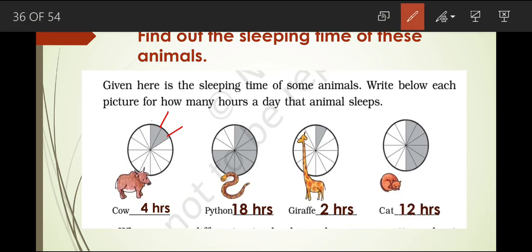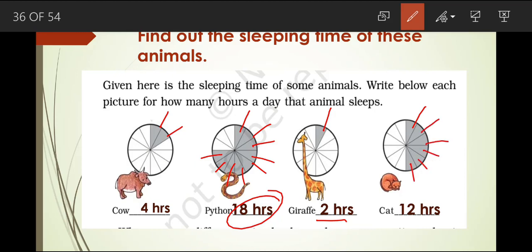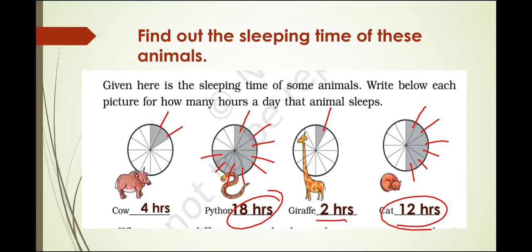Let us count one more time: for the python it comes to 18 hours. The giraffe has only one fraction, that is 2 hours. For the cat, counting the fractions gives us 12 hours sleeping time.